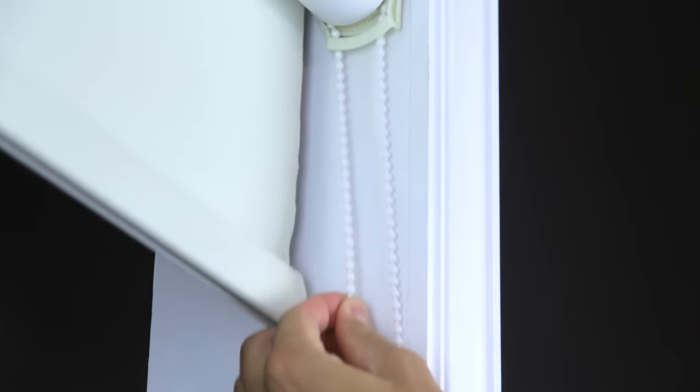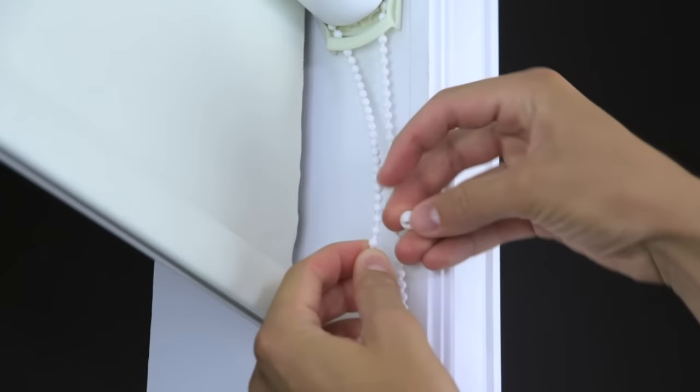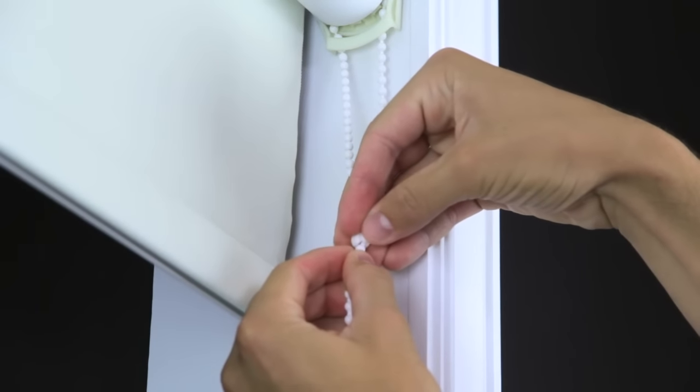Roll the shade up to the desired stopping point. Hold the chain at the first bead outside of the clutch. Pull the chain down and install the stop ball two beads above the bead you are holding.